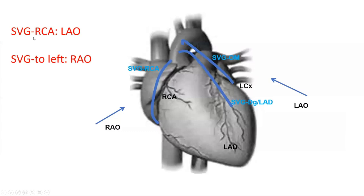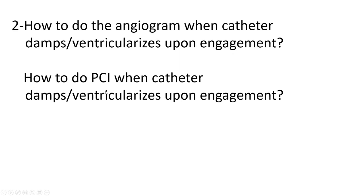For grafts: for graft to the right, you need LAO to be orthogonal. For graft to the left, you need RAO. You adjust the steepness of the RAO or LAO to get one line between the aorta and the ostium, with no overlay of contrast spilling in the aorta over the ostium. If you have circle markers around the ostium, take a view orthogonal so that circle becomes one line. The next topic — and perhaps the single most important in this talk — is how to do an angiogram when your catheter damps or ventricularizes upon engagement, and how to do PCI when this happens.